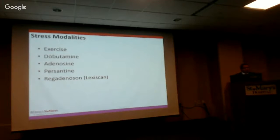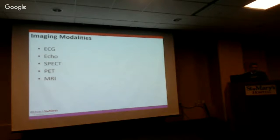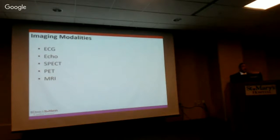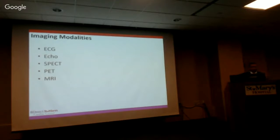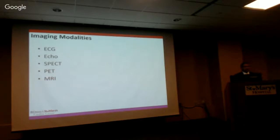For stressing our patients, we can exercise them or use pharmacologic agents like dobutamine, adenosine, persantine, and Lexiscan or regadenoson. For detecting problems during stress testing, we can use the ECG, echocardiography which can be added on top of an ECG, SPECT which is our usual nuclear perfusion study, PET scanning which gives better pictures but is expensive, and MRI which is also available as an imaging modality.